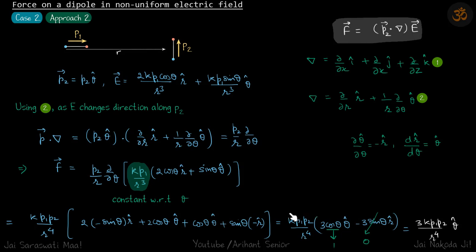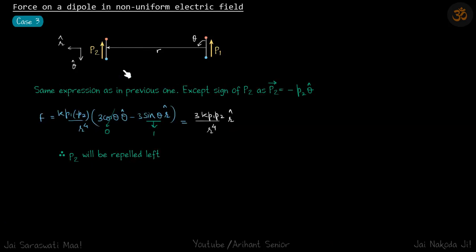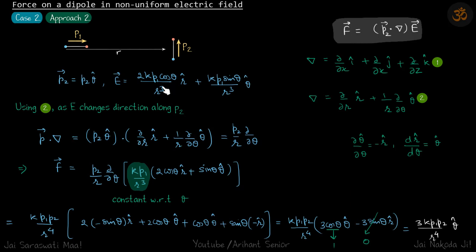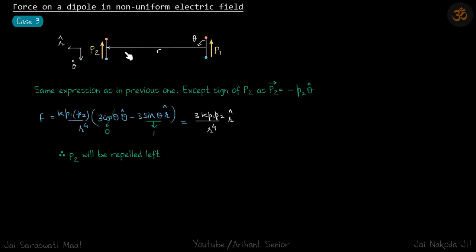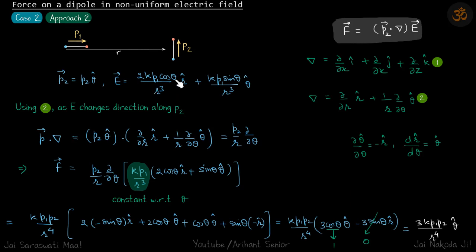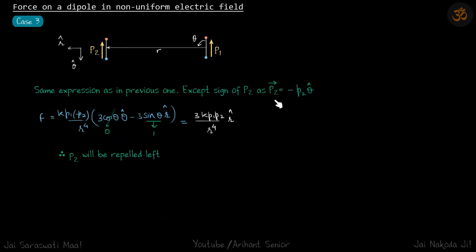Case 3: both dipoles are parallel to each other. I keep θ in the counter-clockwise sense, with p and r making angle θ. This dipole is at distance r; r-cap and θ-cap are as shown. We can reuse the same electric field equation used in Approach 2. Even if you don't align them this way you'll get the same answer, but to keep the equation identical and avoid redoing calculations, I've aligned the dipoles this way.